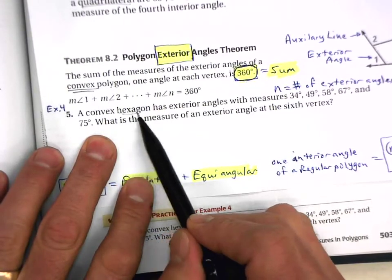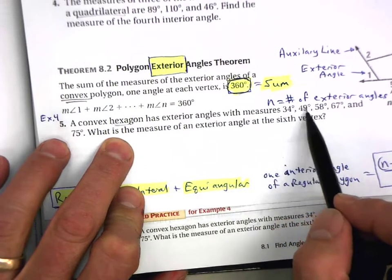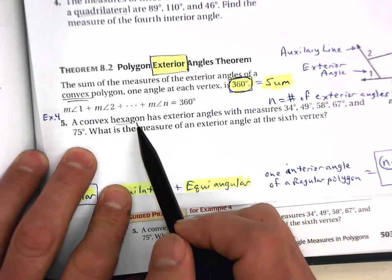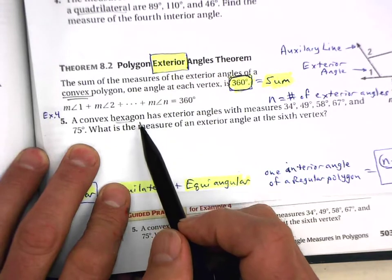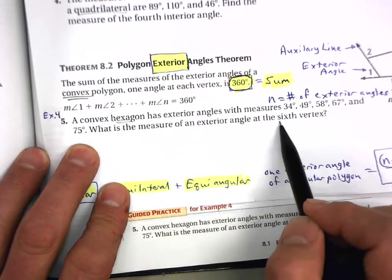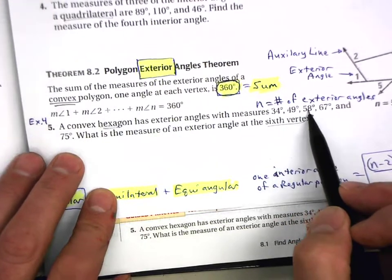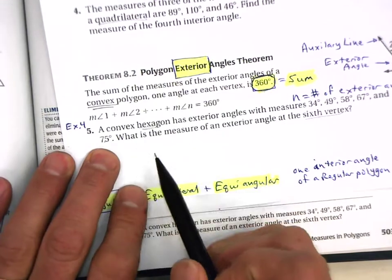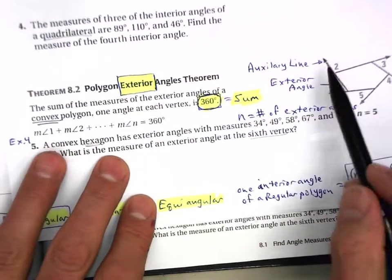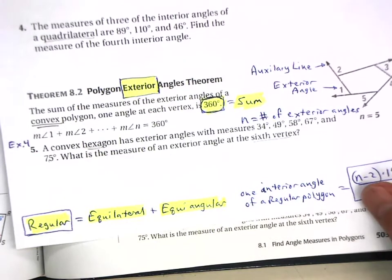For question five, a convex hexagon has six sides and therefore six exterior angles. They give you five of those exterior angles and want you to find the sixth. Set up: 34 + 49 + 58 + 67 + 75 + x = 360. The sum of the exterior angles is always 360, so solve that equation for x.